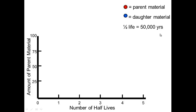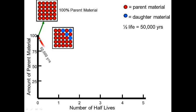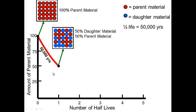Let's look at this graph. Say you have 100 atoms of parent material that will decay into the daughter material, and instead of 4.5 billion years our half-life is 50,000 years. The x-axis shows 50,000 — 100,000 — 150,000 — 200,000 — 250,000 years, and the y-axis shows 100%, 75%, 50%, and 25% parent material. Starting at 100 percent, after 50,000 years — one half-life — 50 percent has decayed; I have 50 percent parent and 50 percent daughter material.